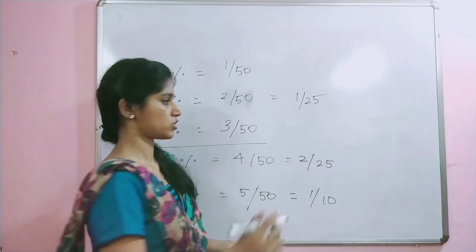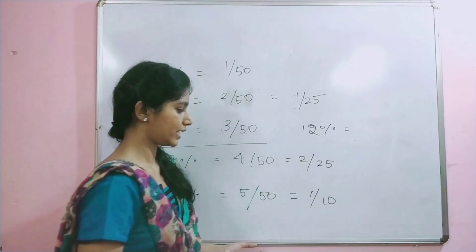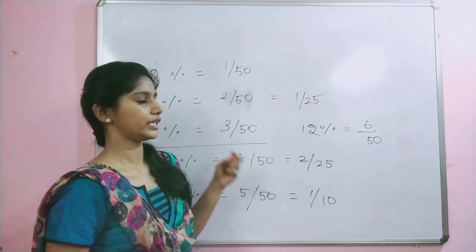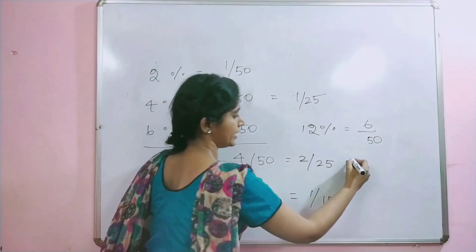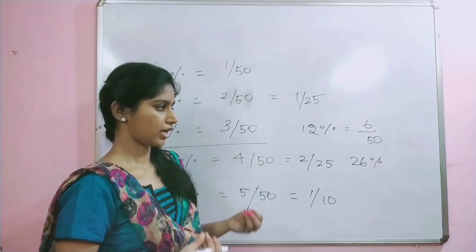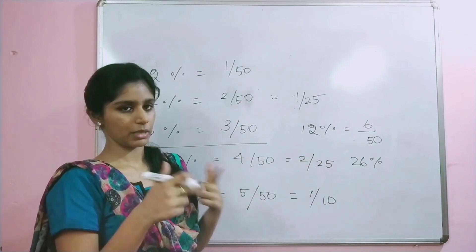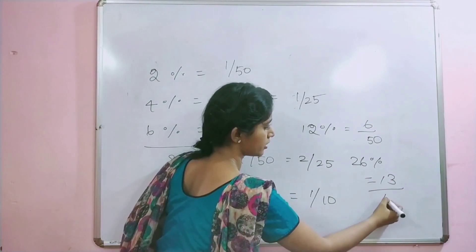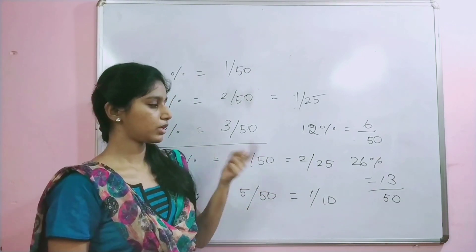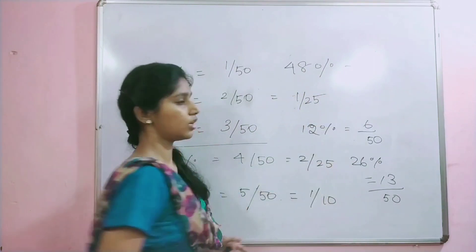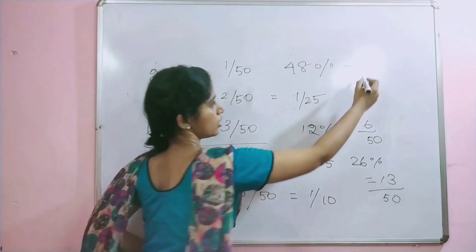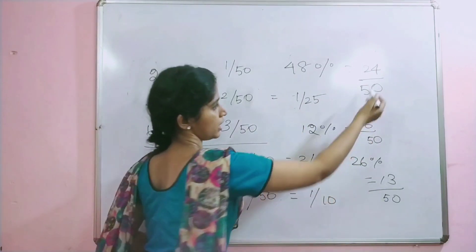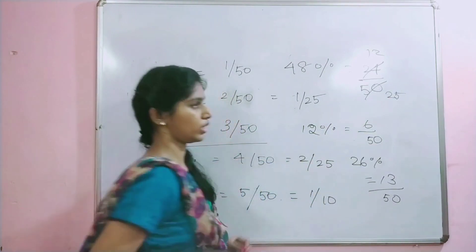For example, even number 12 is 6 by 50. For in-between numbers, 26 percentage. This is even number. 26 divided by 2 equals 13 by 50. The denominator is 50. 48 percentage: 48 is 24, so 24 by denominator 50. 24 by 50, we divide by 2 and get 12 by 25.